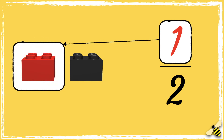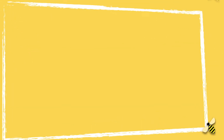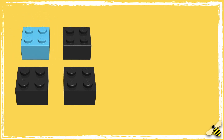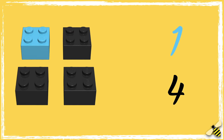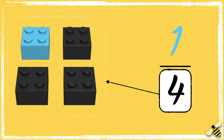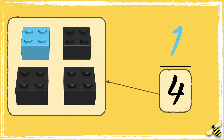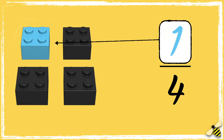The top number is the part, which in this case is one red brick. This is called the numerator. Let's have a look at one quarter. Here are four bricks. For one quarter of the bricks, one is blue. There are four bricks altogether and one of them is blue. This is what a fraction looks like for one quarter. The bottom number is the whole amount, which in this case is four bricks, so the denominator is four.